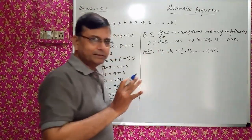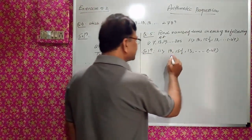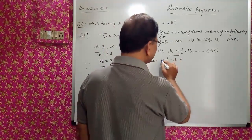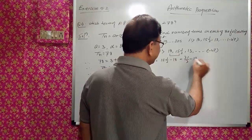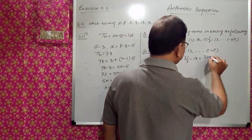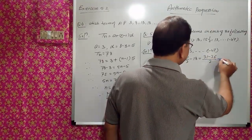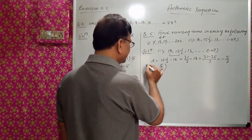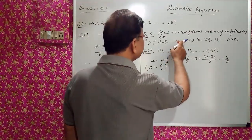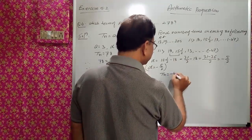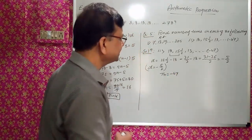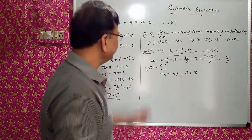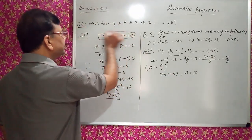We need to find the common difference D. D = 15½ - 18 = 31/2 - 18. LCM is 2, so D = (31 - 36)/2 = -5/2. So D = -5/2. TN is given as -47, number of terms N is required, and first term A = 18. A is known, D is known, TN is known, so we can use the formula and find N.